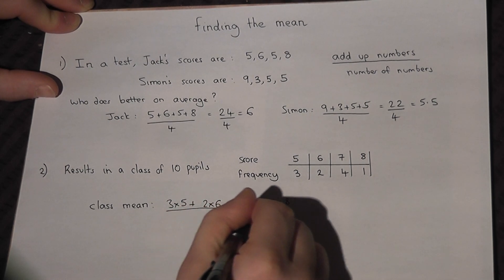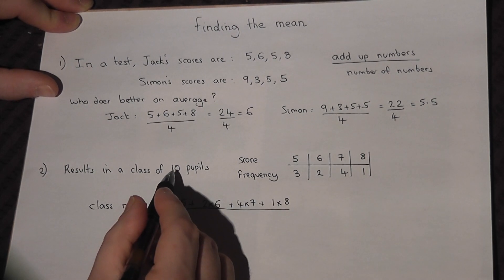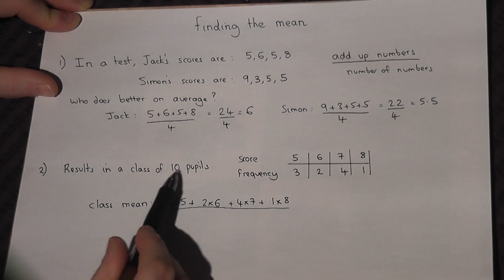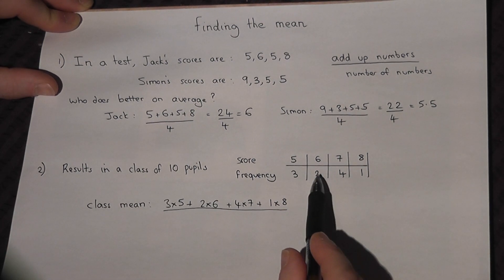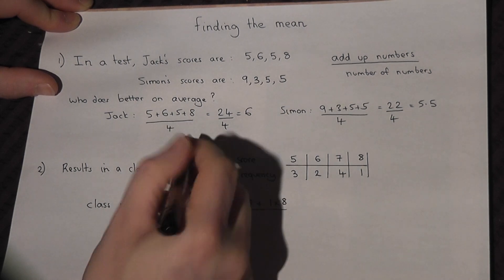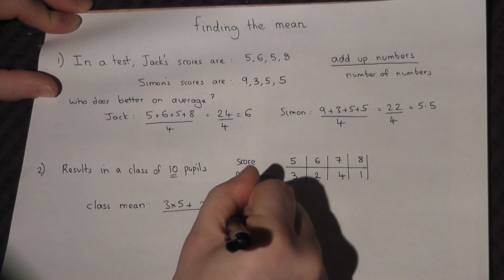And in total, 10 people took the test. If we weren't told that, we would add up the frequencies. 3 plus 2 plus 4 plus 1 is 10. So we divide by 10.